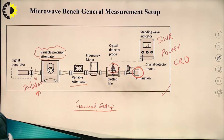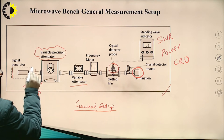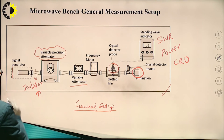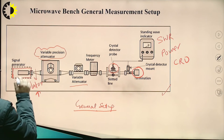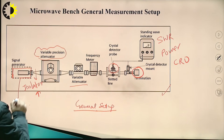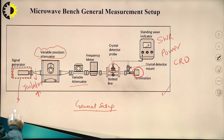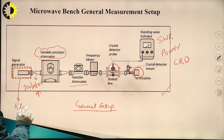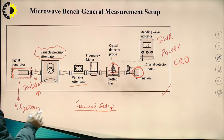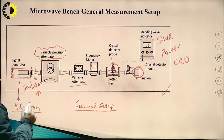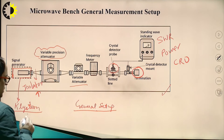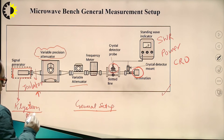The first component is the signal generator, which generates the microwave signal. For experimental purposes we always use a klystron as the signal generator — specifically the reflex klystron, which we have already discussed.